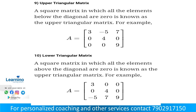The next one is upper triangular matrix. An upper triangular matrix is a square matrix in which all the elements below the principal diagonal are zero.